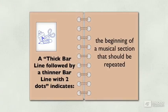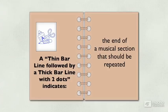A thick bar line followed by a thinner bar line with two dots indicates the beginning of a musical section that should be repeated. A thin bar line followed by a thick bar line with two dots indicates the end of a musical section that should be repeated.